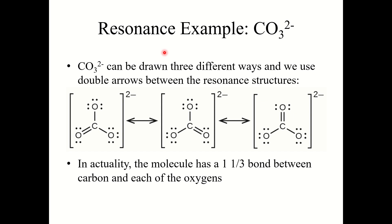Another example of resonance is the carbonate ion, CO3 2 minus, which can be drawn three different ways with double arrows between the resonance structures — the double bond can be placed between carbon and any one of the three oxygens. In reality, the molecule has a one and one-third bond between carbon and each oxygen, rather than one double bond and two single bonds.